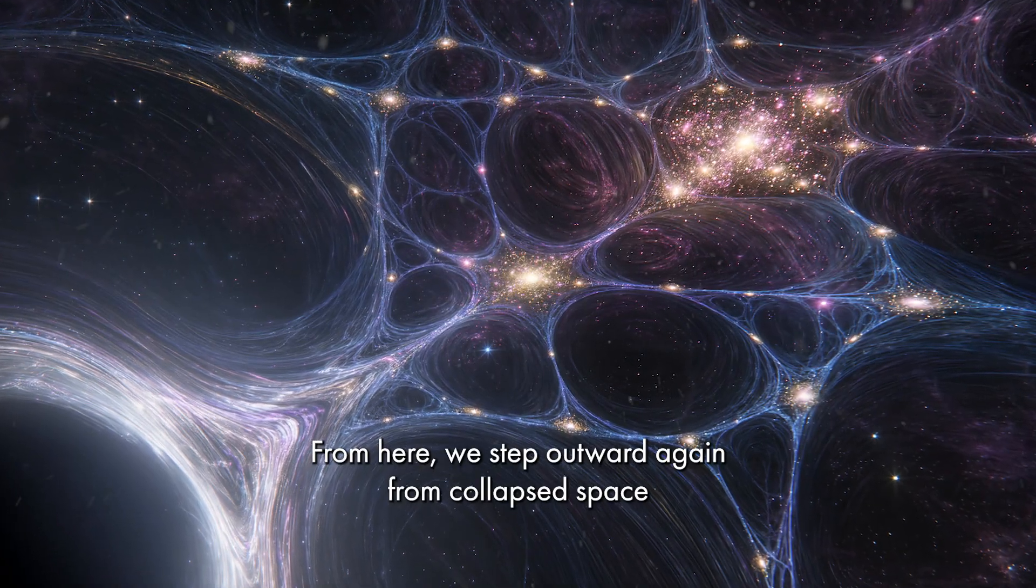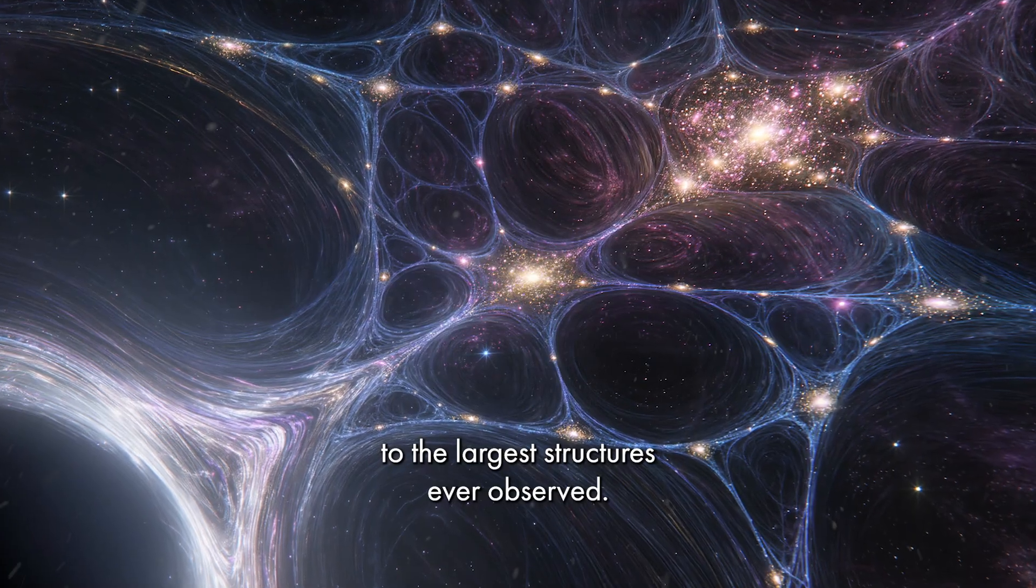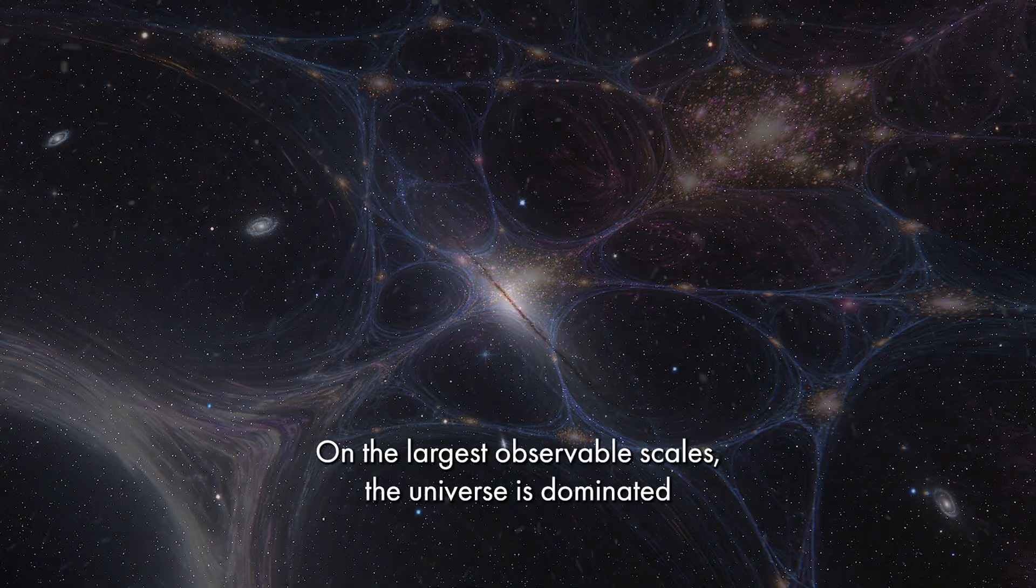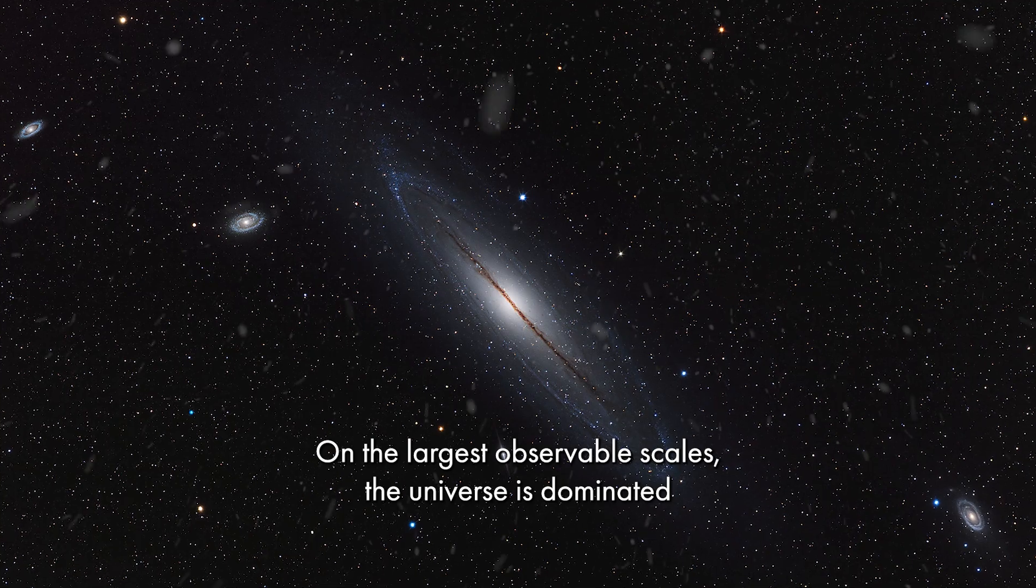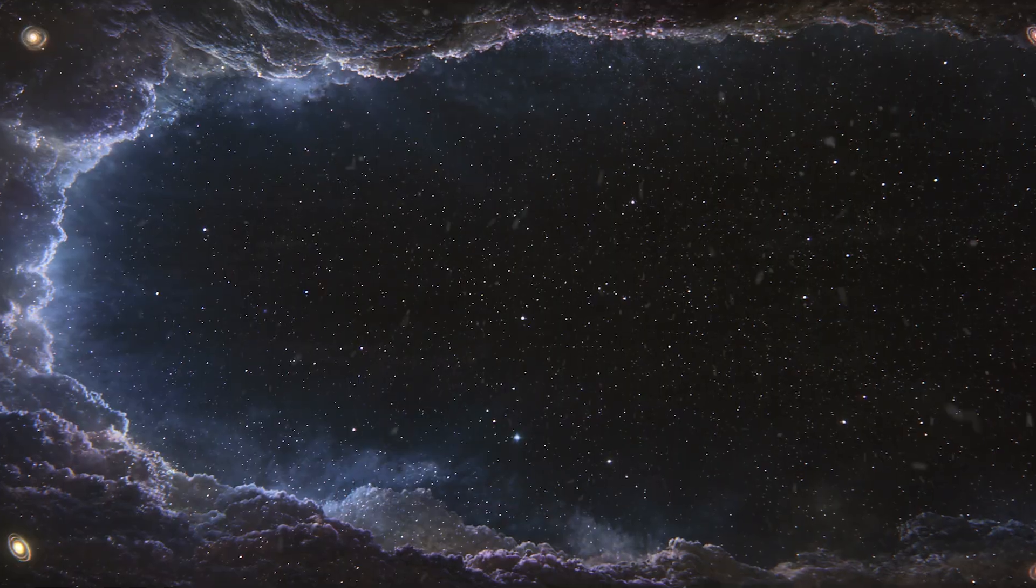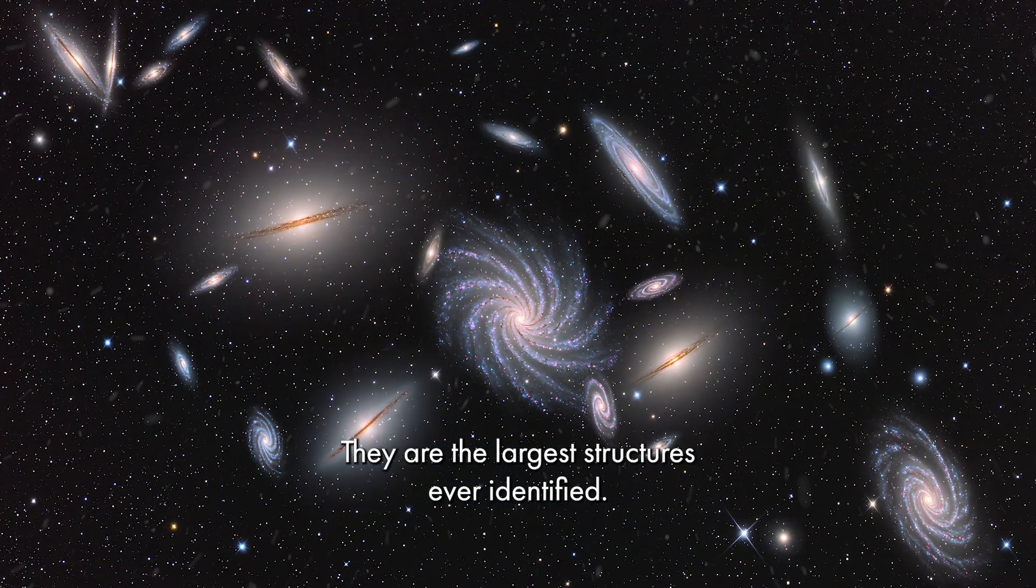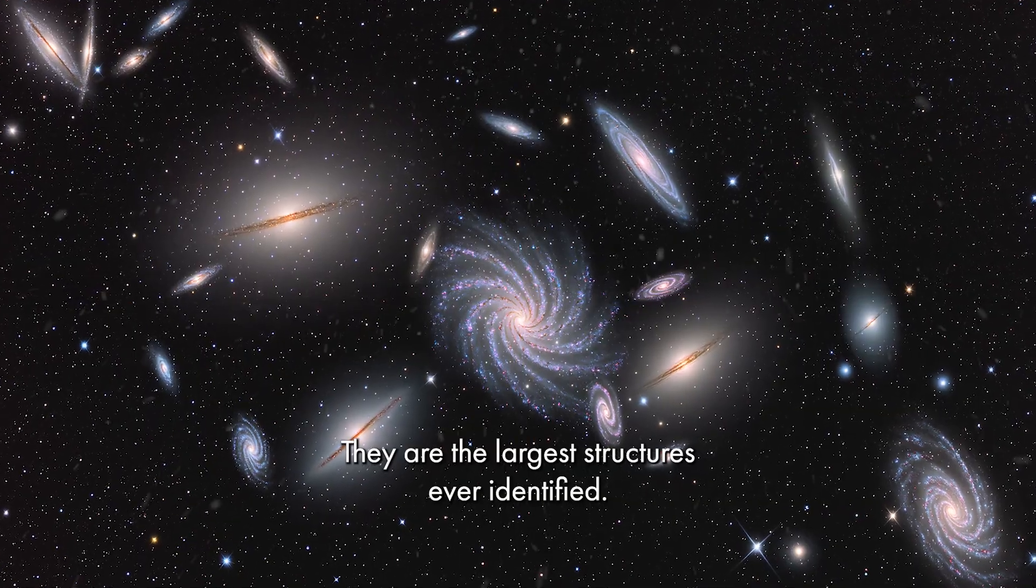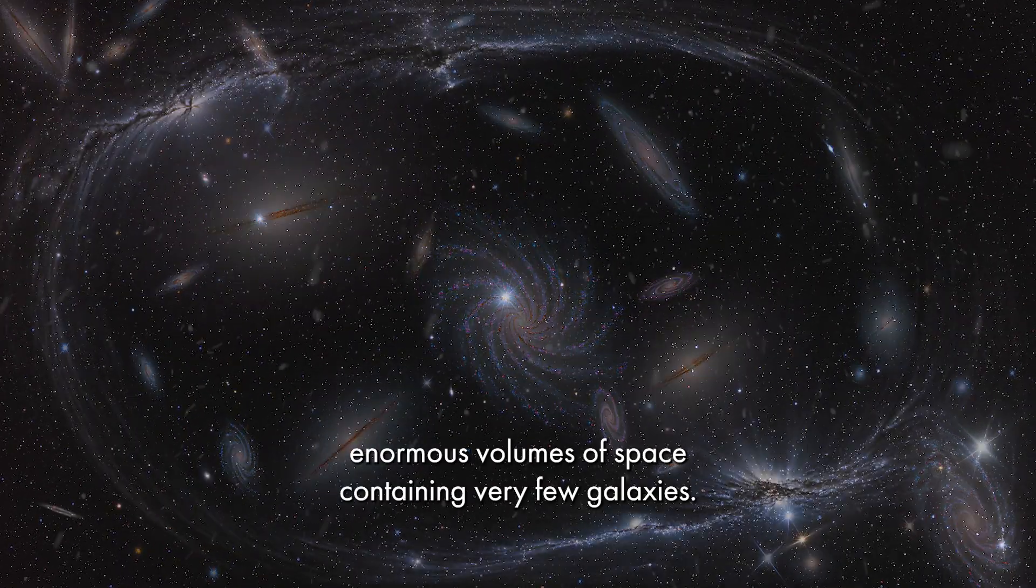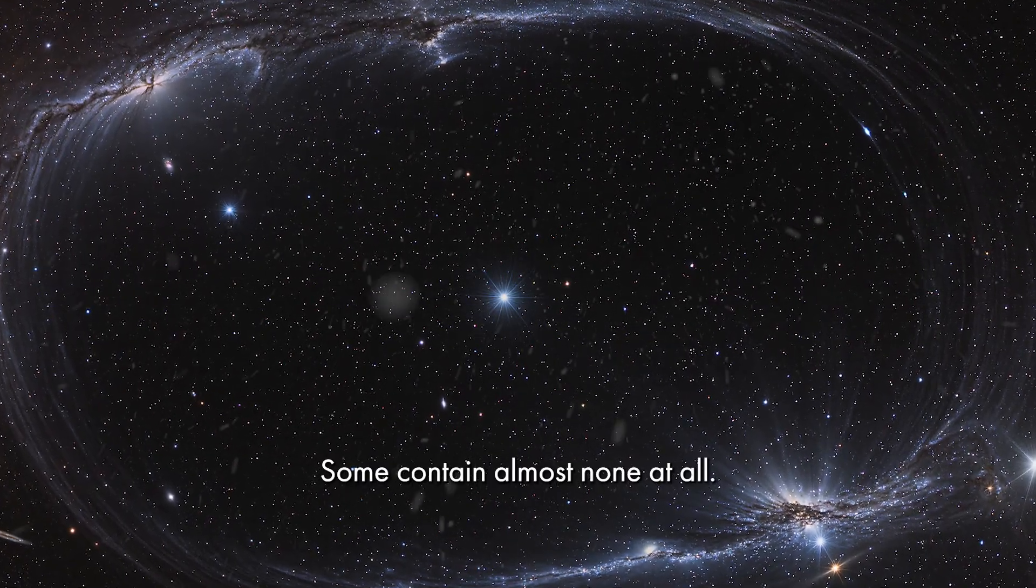From here we step outward again. From collapsed space to the largest structures ever observed. On the largest observable scales, the universe is dominated not by galaxies, but by vast regions of almost complete emptiness. These regions are known as cosmic voids. They are the largest structures ever identified. Cosmic voids are enormous volumes of space, containing very few galaxies. Some contain almost none at all.